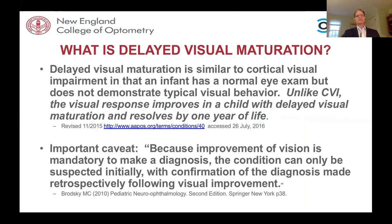Delayed visual maturation is appropriately defined when visual function returns to normal within the first year of life — you almost can't make that diagnosis until the vision has improved. This is why I am more likely to give a diagnosis of CVI rather than delayed visual maturation, and perhaps after year one, if both vision function and functional vision have improved dramatically, would I consider reclassifying it as delayed visual maturation.